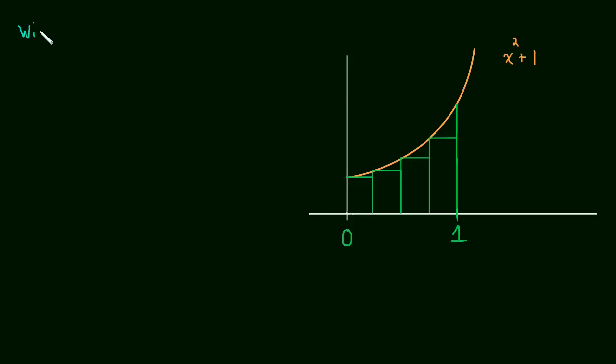So we'll go through the exact same process. The width of each rectangle is just going to be the length of the interval, 1 minus 0, divided by the number of rectangles. So that's 1 over n.